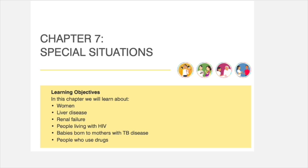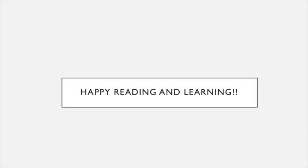Special chapters in these guidelines cover special situations such as TB infection in pregnant females, those with liver disease, renal disease, HIV, and infants born to positive mothers. These can be accessed freely online and referred to whenever needed. This is the end of my summarization of the guidelines. I hope it helps you in your practice. Happy reading and learning — I'll see you again with another topic. Thank you.